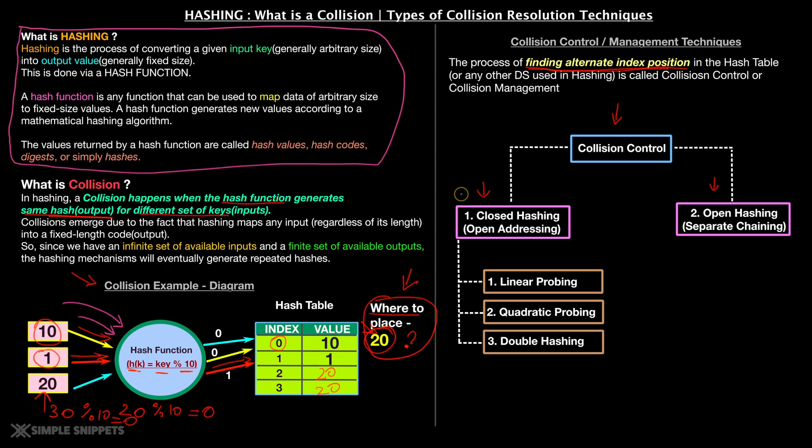So this was just a detailed introduction to what is a collision when you are doing hashing. Why does a collision happen? That is because generally we have infinite set of available inputs and only a finite set of available outputs. Because if you see the definition also of hash function, hashing is the process of converting a given input which is generally of arbitrary size, it can be of random size, but it converts it into an output which is generally of fixed size. So if you have thousand keys but if you only have a hundred memory locations, obviously some keys are gonna go into same memory locations, right? Now how you place them is called collision control. So that is the reason why collision happens.